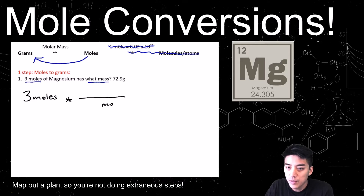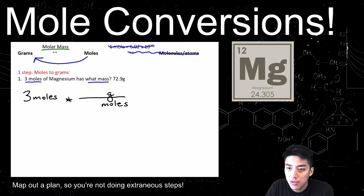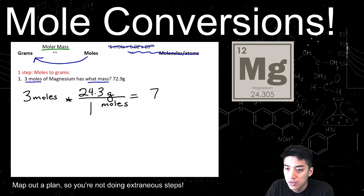Three moles — draw a line. Make sure your units line up so that they cancel. Because you're being asked to solve for mass, grams will go on top. Now we just need the molar mass — find a periodic table. Since we're dealing with magnesium, the molar mass is 24.3 grams per one mole. Three times 24.3 is 72.9 grams.